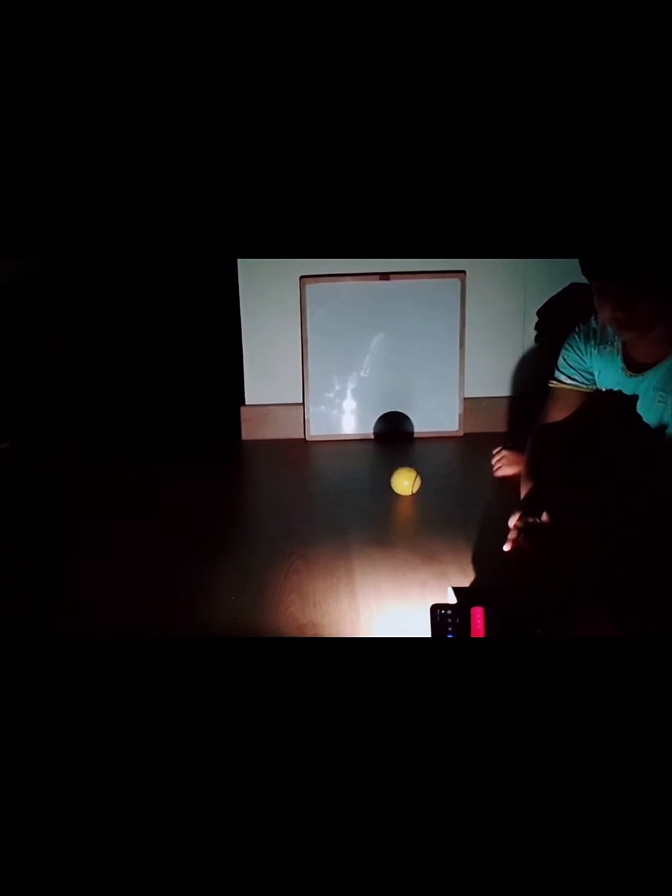Here, the mobile torch is the source of light, the ball is the object, and the white board is where the shadow will be formed.